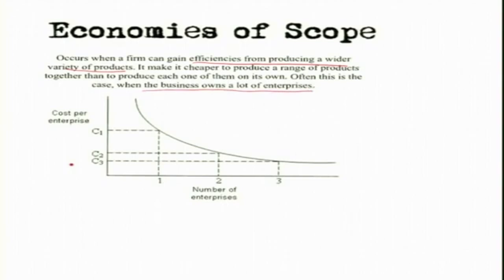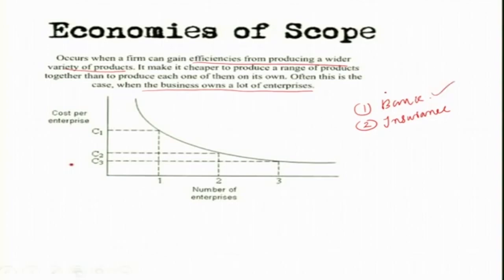For example, a large bank has several branches across the country and strong economic, managerial, and technical capacities. Because of that, banks can also start an insurance business. They already have the infrastructure and premises across the country — a wide network. It is easier for them to start an insurance firm, and because they have a large number of customers, it is easy to sell insurance products to them as well. State Bank of India, for example, has SBI Life Insurance.